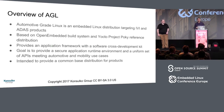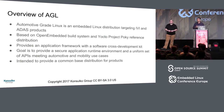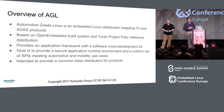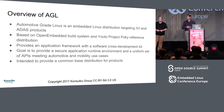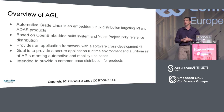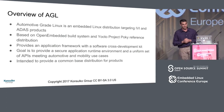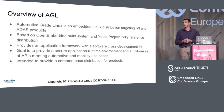Automotive Grade Linux is an embedded Linux distribution targeting IVI and now ADAS products. Historically it was IVI, and the scope is expanding to cover what's needed in real products. It's based on the OpenEmbedded build system and Yocto Project Poky reference distro. One of the key things is there's a well-defined application framework for developing applications, making that a lot simpler than the random libraries we might work with on traditional Linux. The goal is to provide a secure sandboxed application runtime environment with a uniform set of APIs meeting developer needs, and to provide a common base for real products in the automotive market.